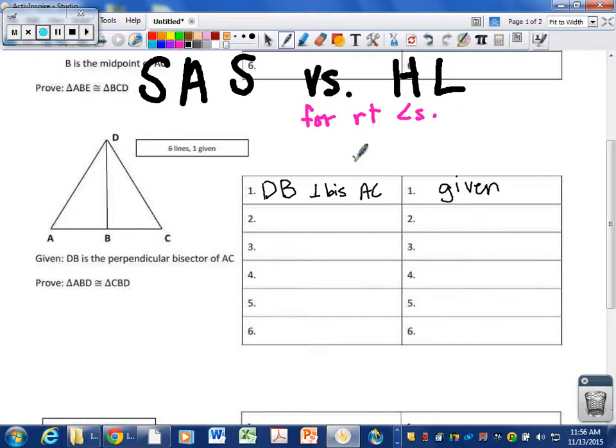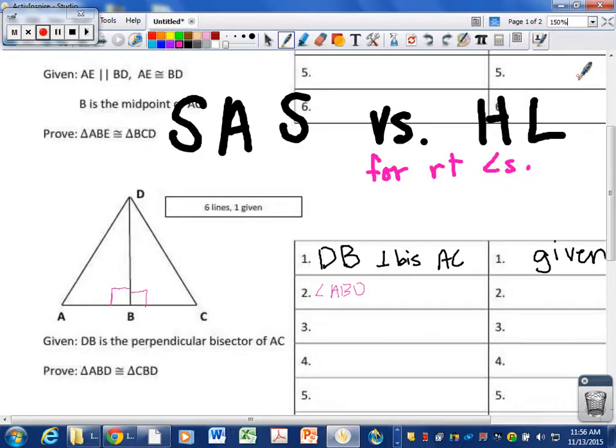So we need to remember some things about perpendicular bisectors from wherever it is that you learned about perpendicular bisectors. The first thing we know about perpendicular bisectors is they're perpendicular of course. So perpendicular means they make right angles. Pardon me while I make this a little bit bigger so that we can write actually on there. 150, that's very nice.